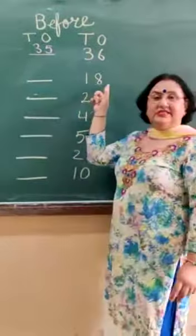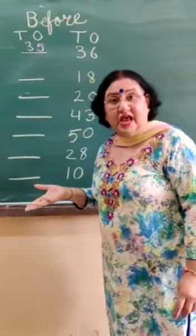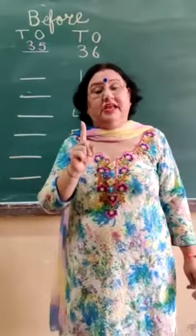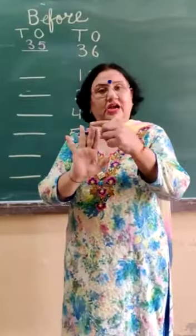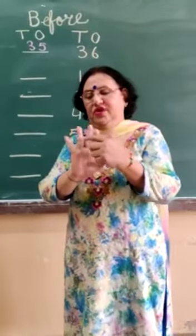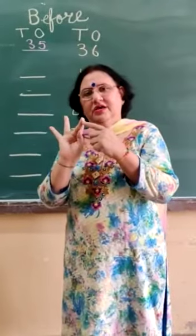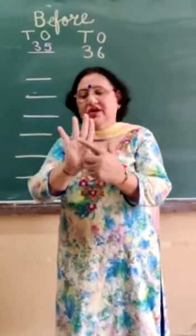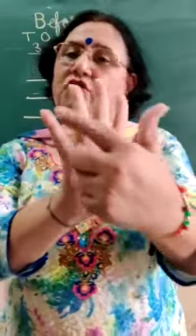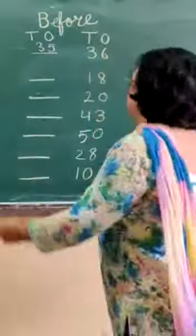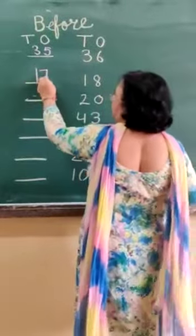Now this number is 18. 18 kis ki line mein aata hai? 18 comes in 1's line. 11 ki line mein aata hai. Start counting. 11, 12, 13, 14, 15, 16, 17, 18. 18 si upar man ne kya bola? 17. You will count these boxes. We have 3 box in our 1 finger. You will count that. So we will write here. 17.